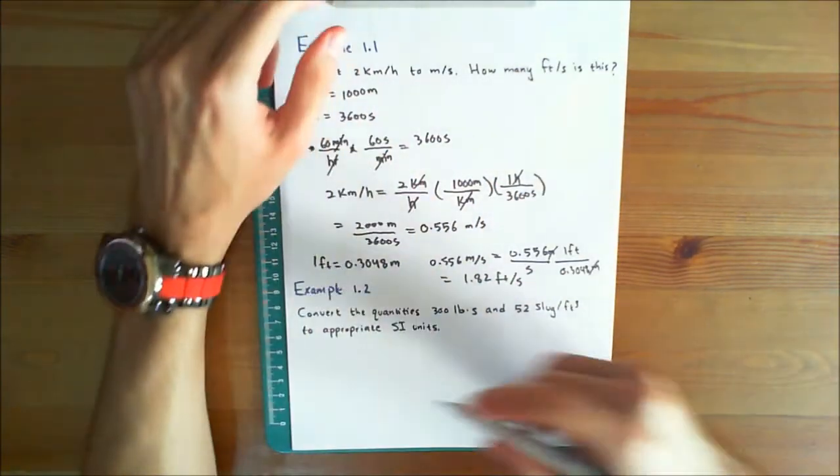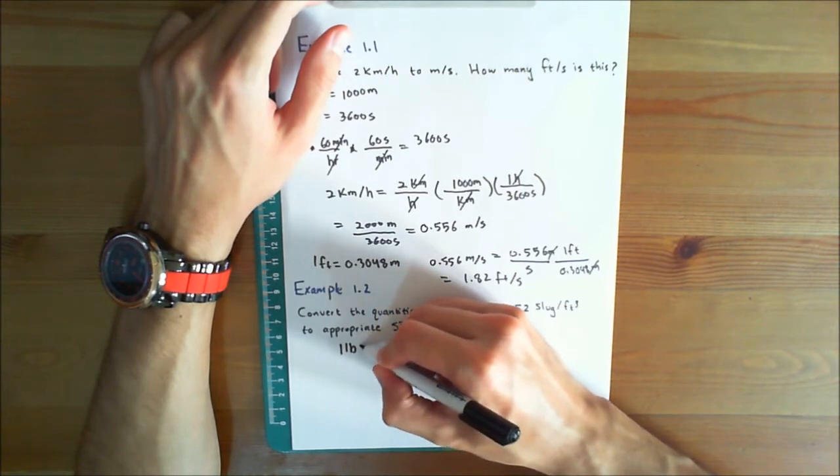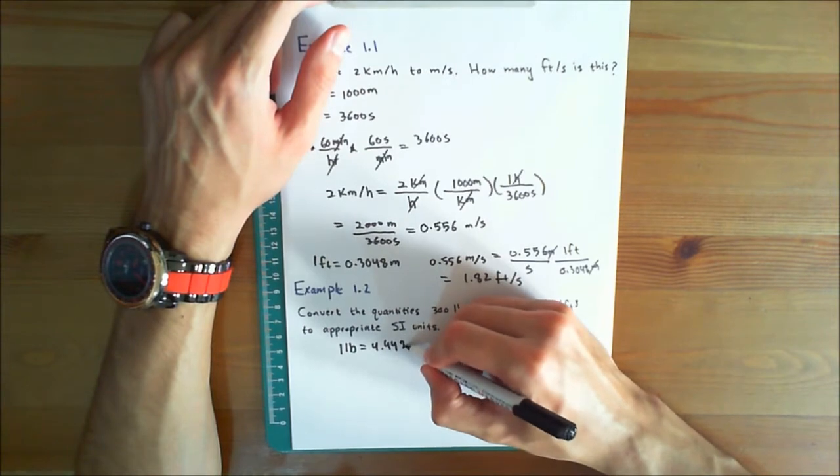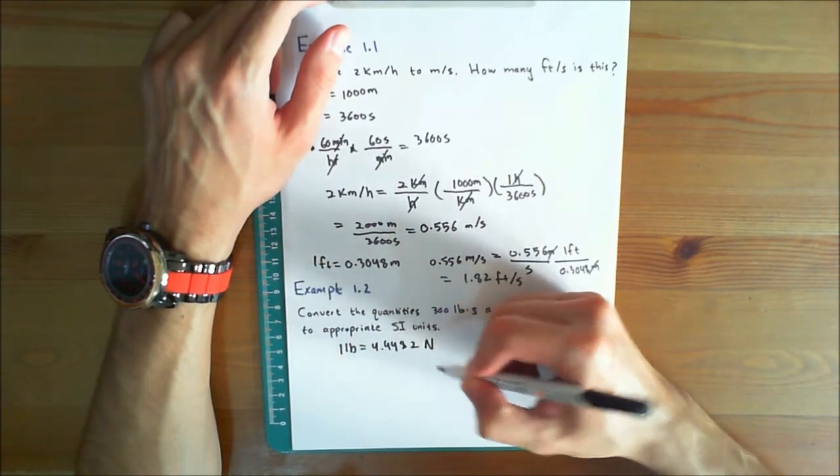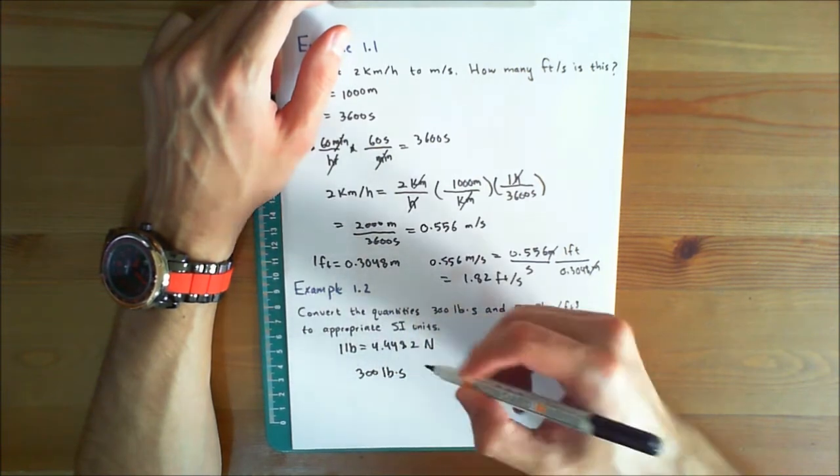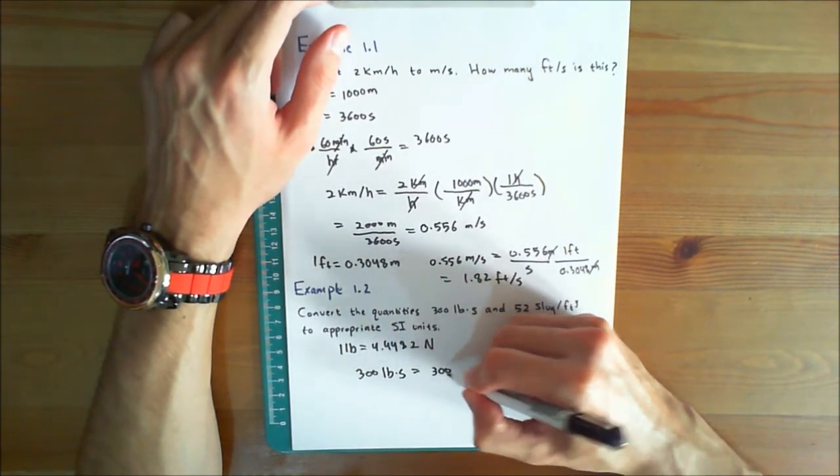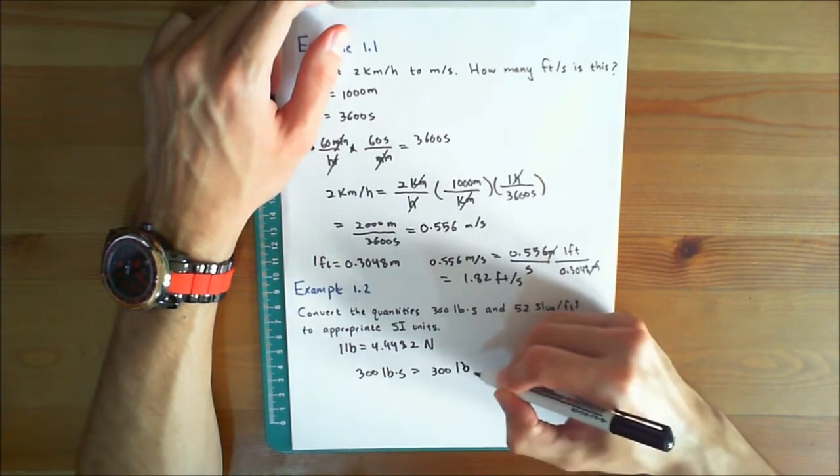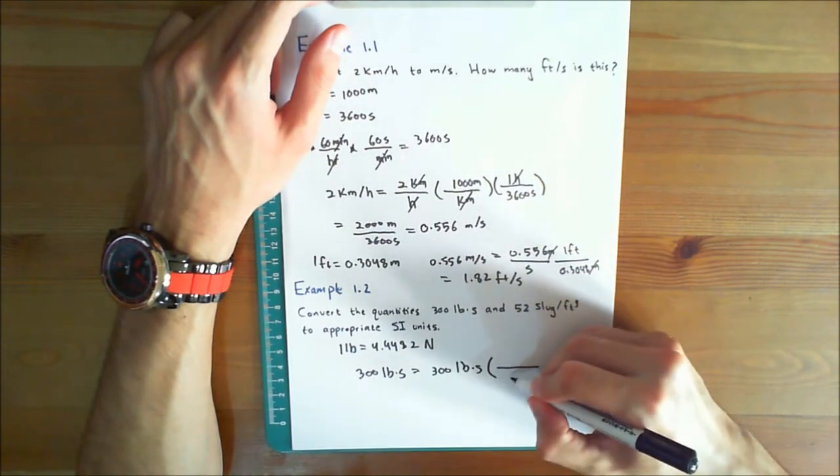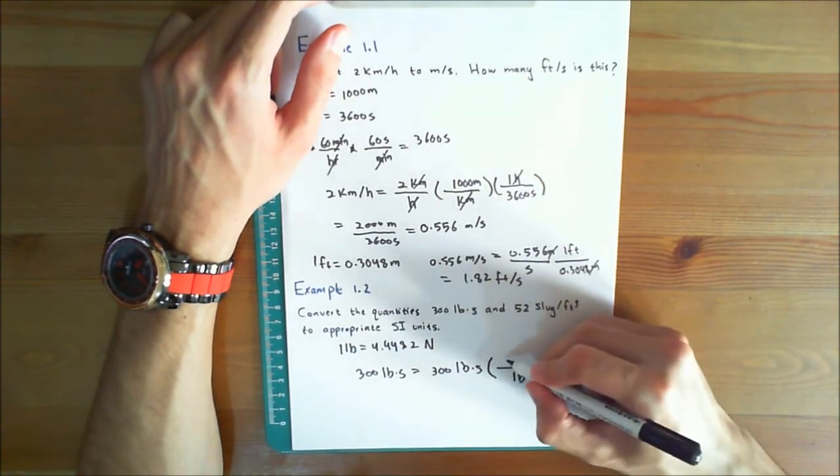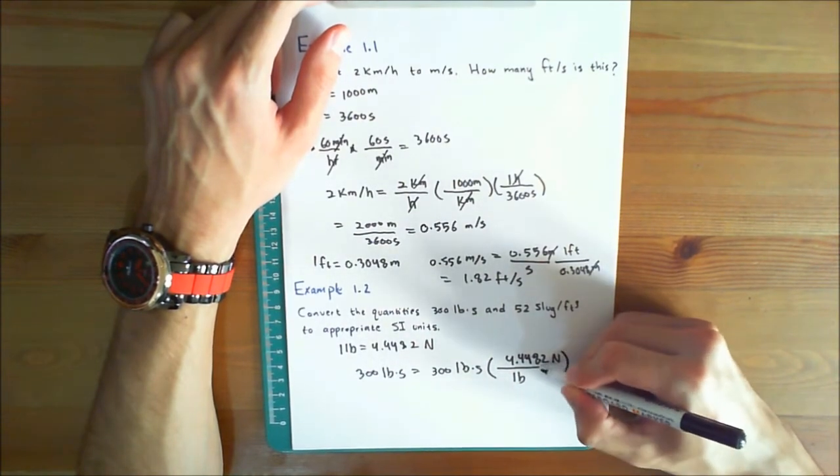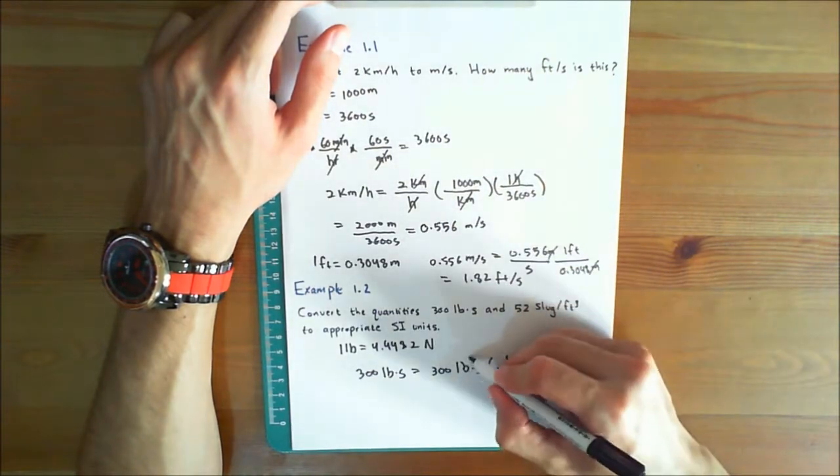Now recall that 1 pound is equal to 4.4482 newtons. So 300 pound second is equal to 300 pound second times 1 pound is 4.4482 newtons. And now you're going to be able to cancel out the pounds.